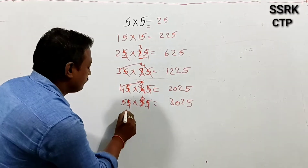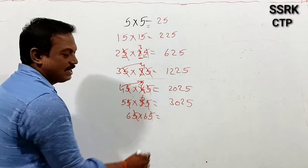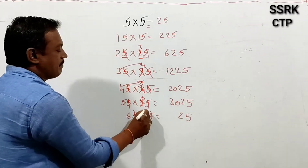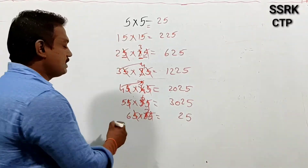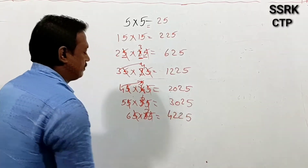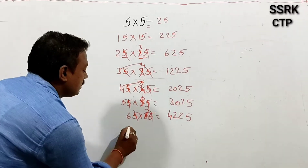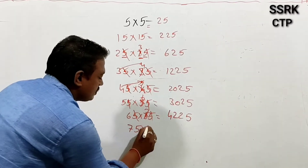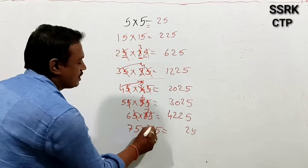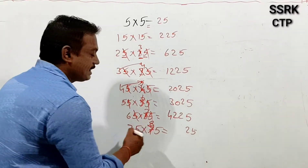Next one: 65×65. So 5×5 is 25. Then 6 after the number is 7, so 7×6 is 42. Result is 4225. Next: 75×75. So 5×5 is 25. Then 7 after the number is 8, so 8×7 is 56. Result is 5625.